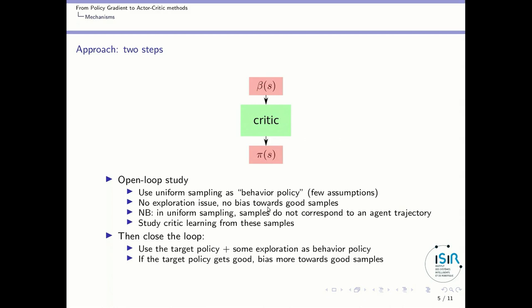After studying those properties, we will close the loop and show the difference it makes to use the learned policy as target policy. We will use the target policy as behavior policy and add some exploration to get the behavior policy. If the target policy gets good, then the behavior policy will be biased toward better and better samples — that's the key idea.